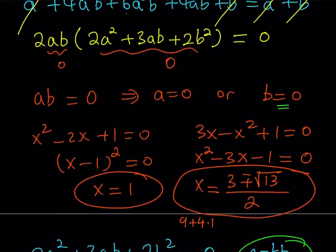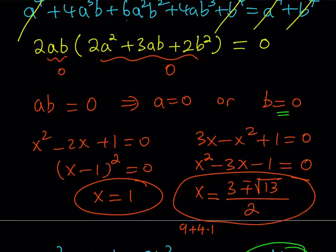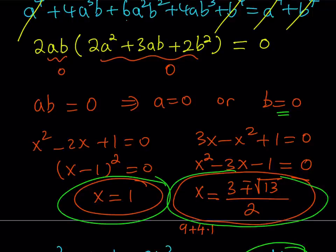So we're at the end. The real solutions for x come only from the first case. You might wonder why there are only three distinct real solutions for an octic — actually there are four real solutions, but x = 1 is repeated because it came from a perfect square. So we have four real solutions, two of which are equal.